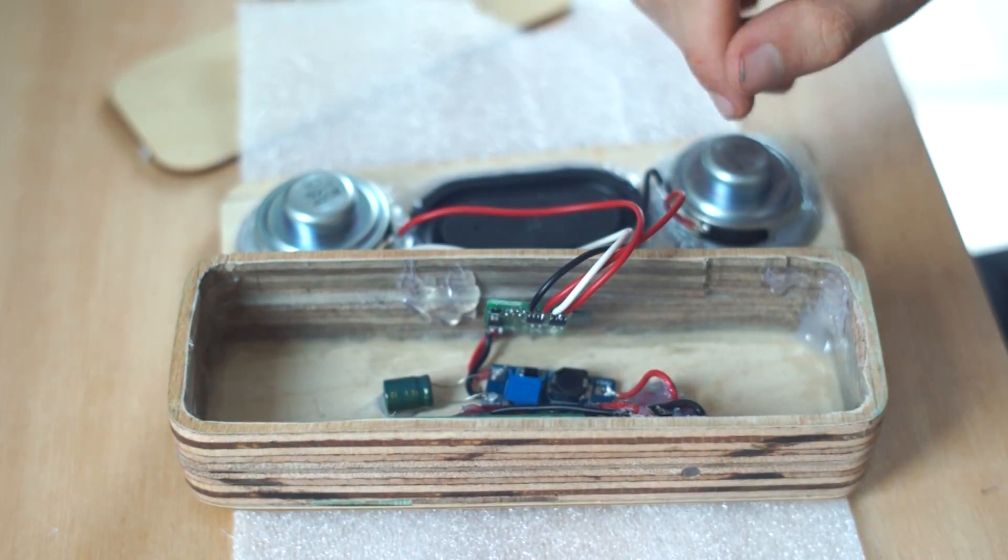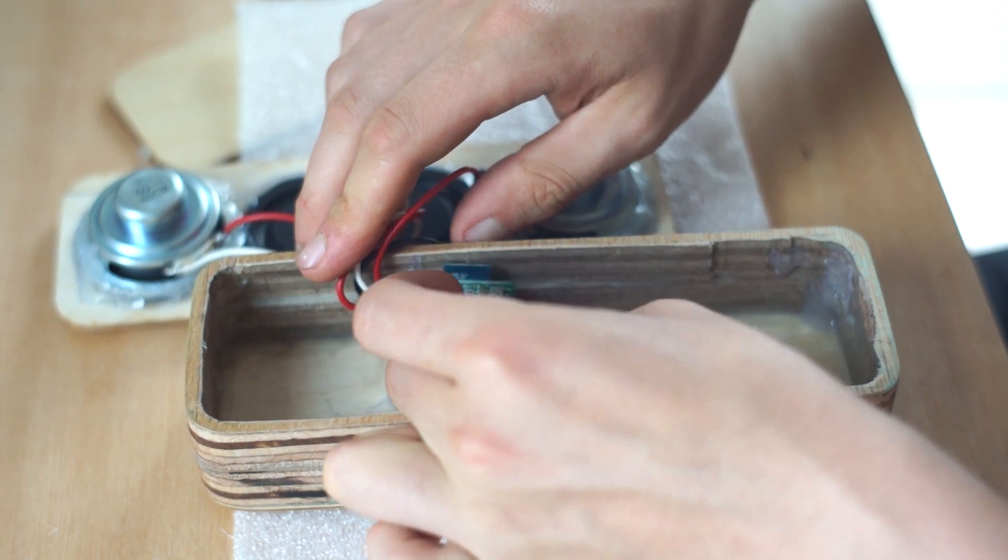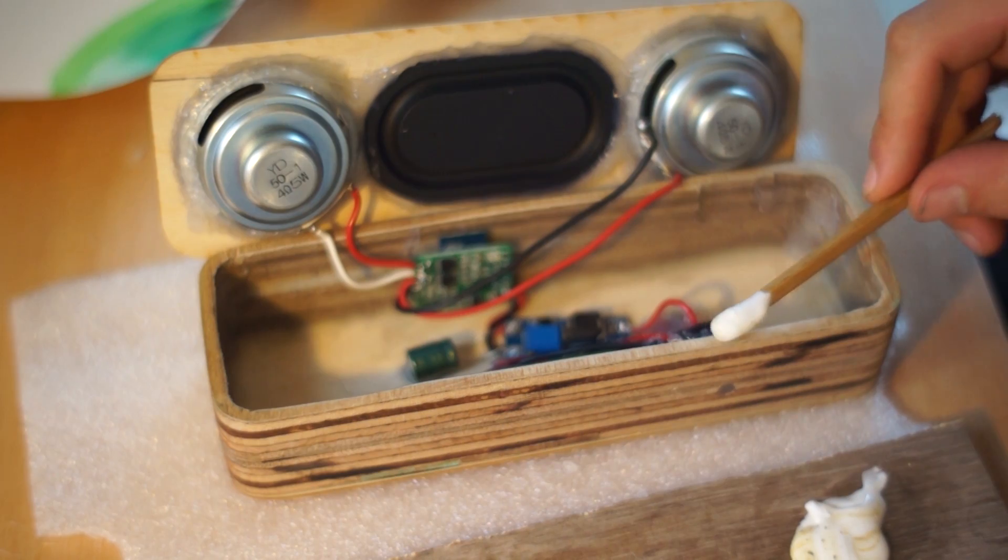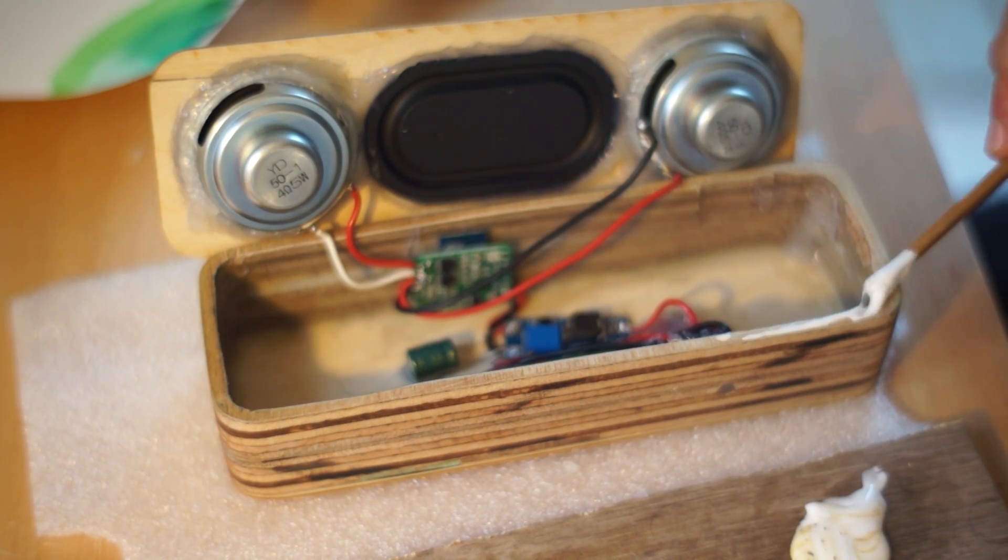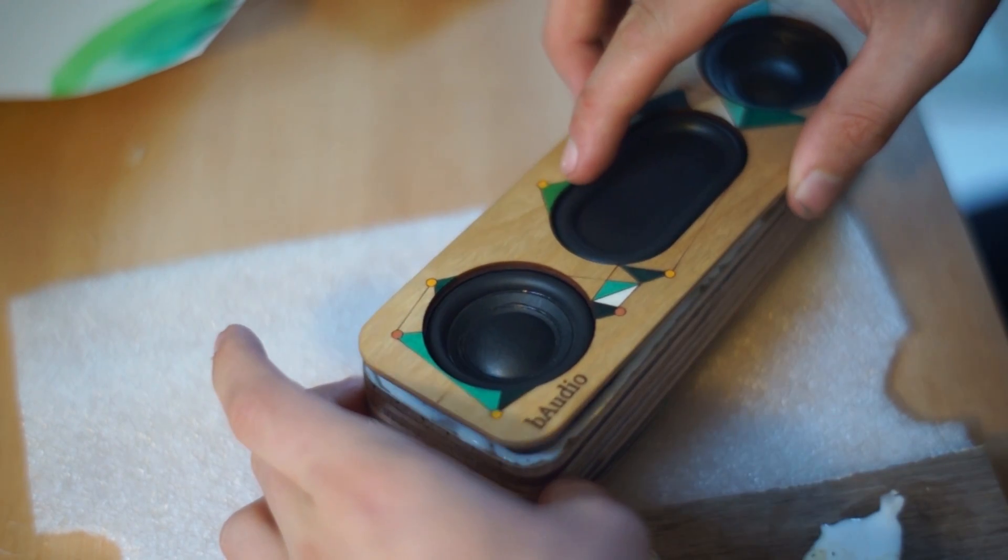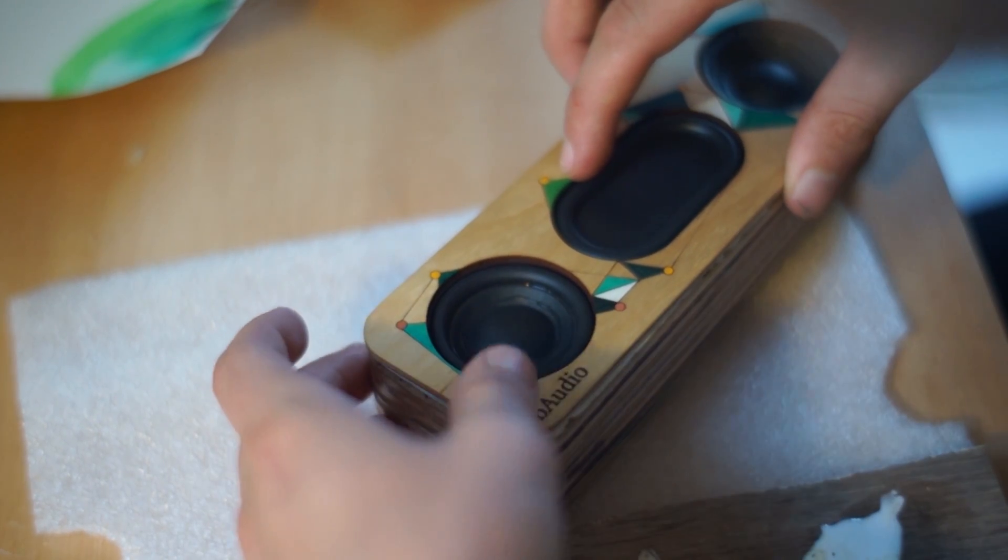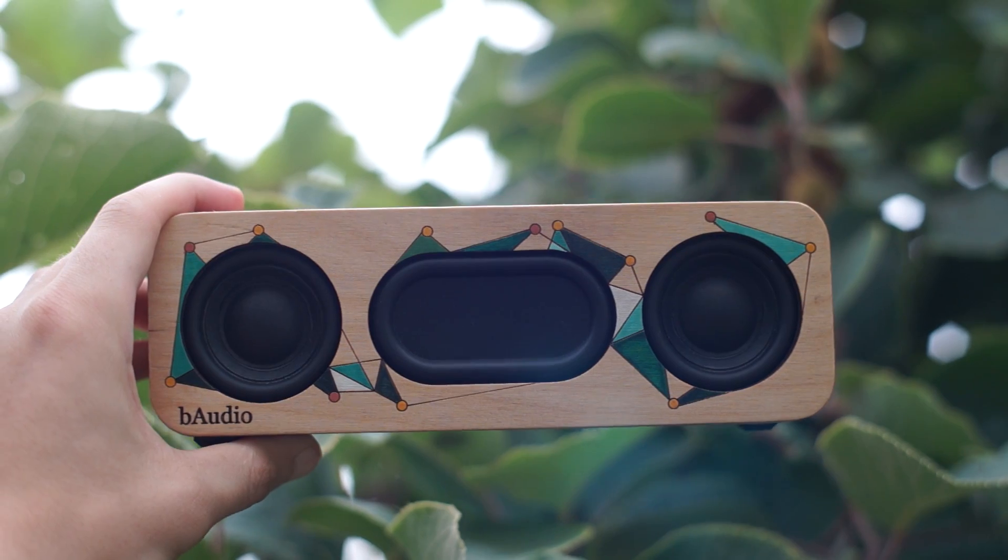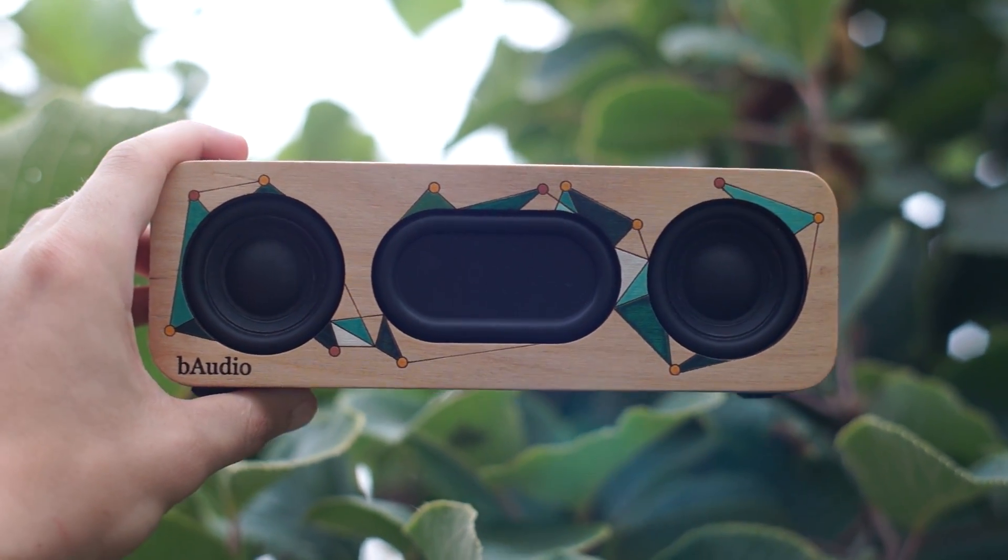Lastly we're going to hot glue in place the step up module and the amplifier and Bluetooth module. Last of all we're going to add a thin layer of glue to the rim of the speaker and we're going to clamp it down and leave it dry overnight. So I hope you enjoyed the video and hopefully it helps you spark some new creativity in your designs.